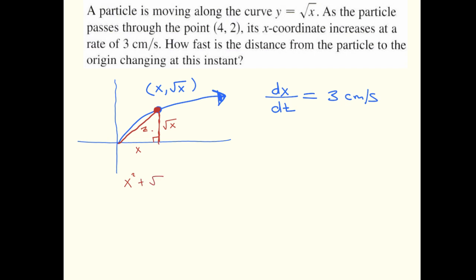So the relationship I want between these variables is just the Pythagorean theorem: x squared plus root x squared equals z squared. Okay, those are the variables. We're given information about how x is changing and we're interested in how z is changing, so this relationship should do it for us. This means x squared plus x equals z squared.